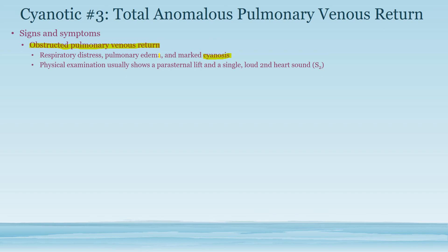The distress and edema make sense because you're backing up blood, but why do you get cyanosis? The cyanosis occurs because the pulmonary venous return is necessary to provide oxygenated blood back to the right heart to go to the left heart. If you block it, you have even less oxygen returning to the right side of the heart to get to circulation. So cyanosis is a very common associated finding.